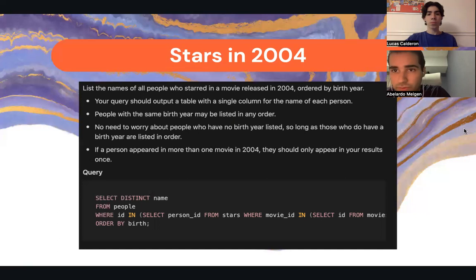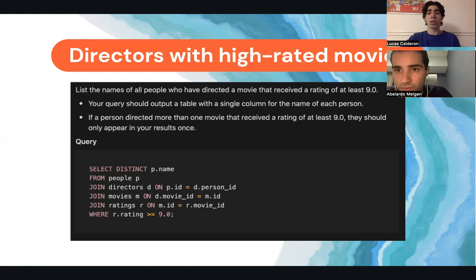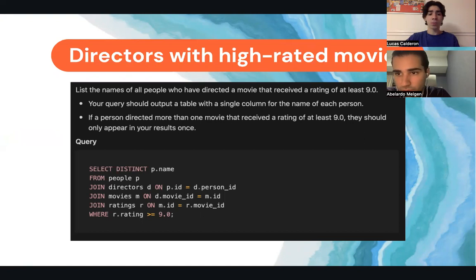For the directors with high-rated movies, we had to list the names of all people who directed a movie that received at least a 9.0 rating. The query has a column for each person who directed a movie with a rating of nine or above, and they should only appear in the results once. We SELECT DISTINCT p.name FROM people, isolating directors that had movies with an R rating of 9.0, joining on movie ID.